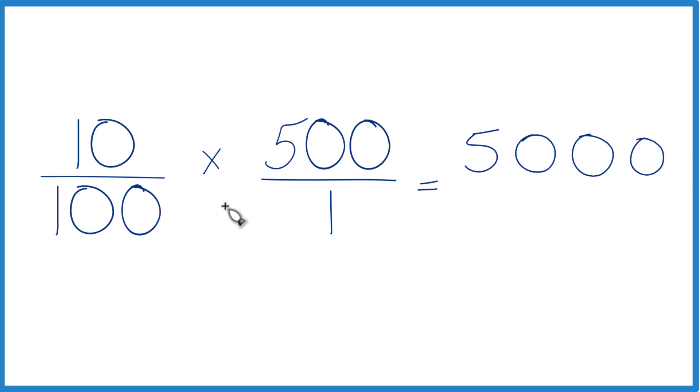And 100 times 1, that gives us 100. And now we divide 5,000 by 100, cross these out here, 50 over 1, that equals 50. So 10% of 500 is 50.